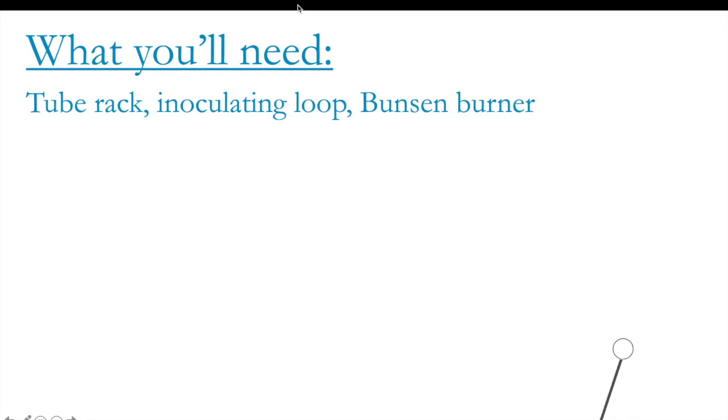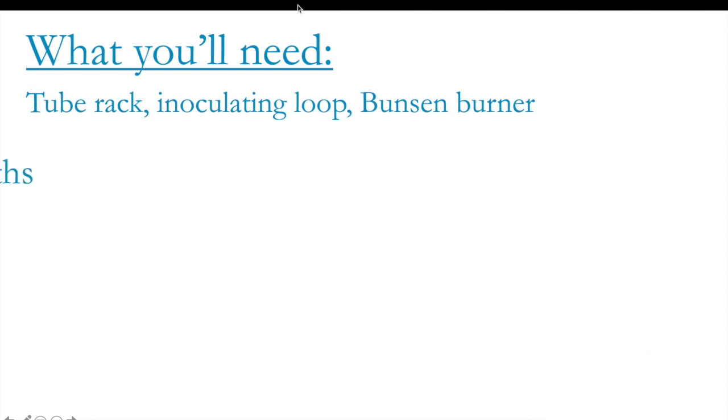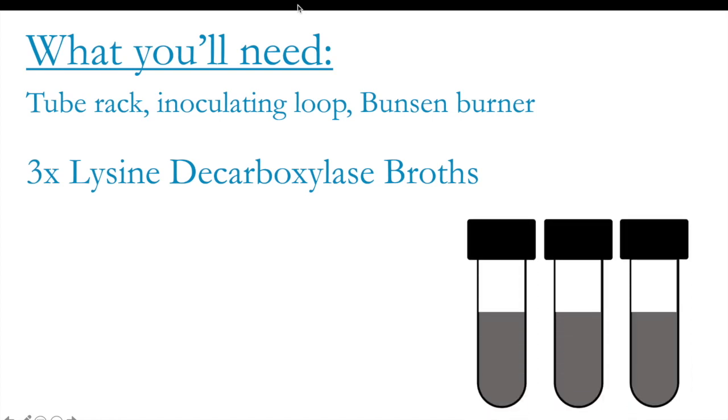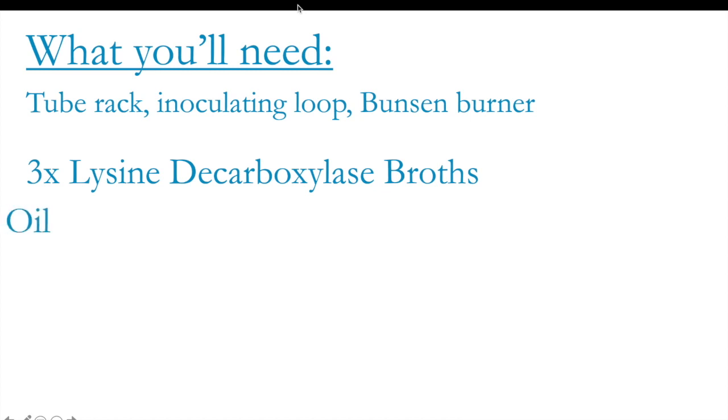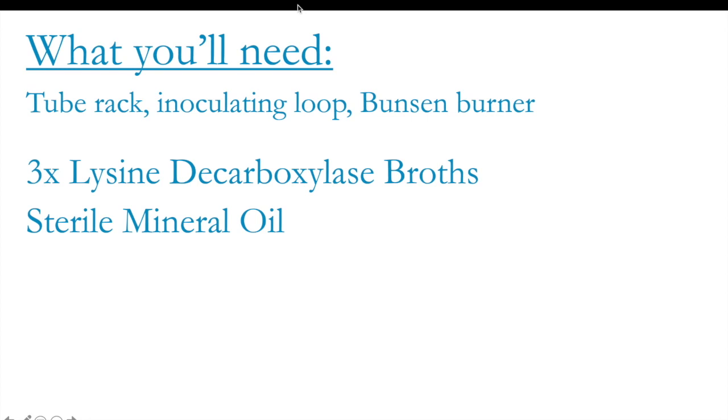So what you'll need: you'll need to grab a tube rack alongside an inoculating loop and a Bunsen burner, of course. Once you have that, you will then need to grab 3 lysine decarboxylase broths. After that, you'll need some sterile mineral oil, and finally, you will need some sterile transfer pipettes in order to transfer the mineral oil into your decarboxylase broths.